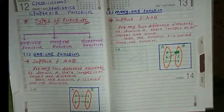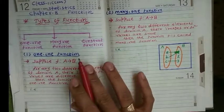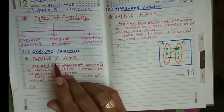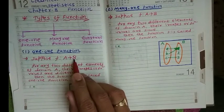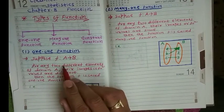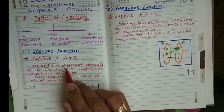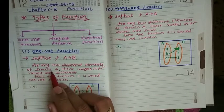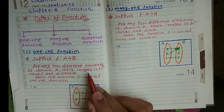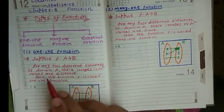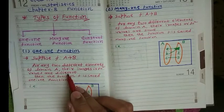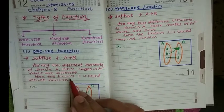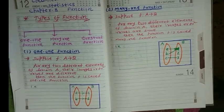First we are going to discuss about the definition of one-one function. Suppose f is a function from A to B. For any two different elements of domain A, their images or functional values are different — then the function f is called a one-one function.